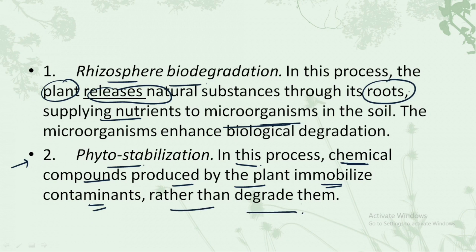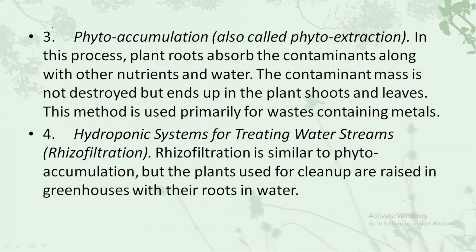The second mechanism is phytostabilization. In this process, chemical compounds produced by the plant immobilize the contaminants rather than degrade them. The chemicals produced by the plant lead to immobilization of the contaminant, but no degradation occurs.